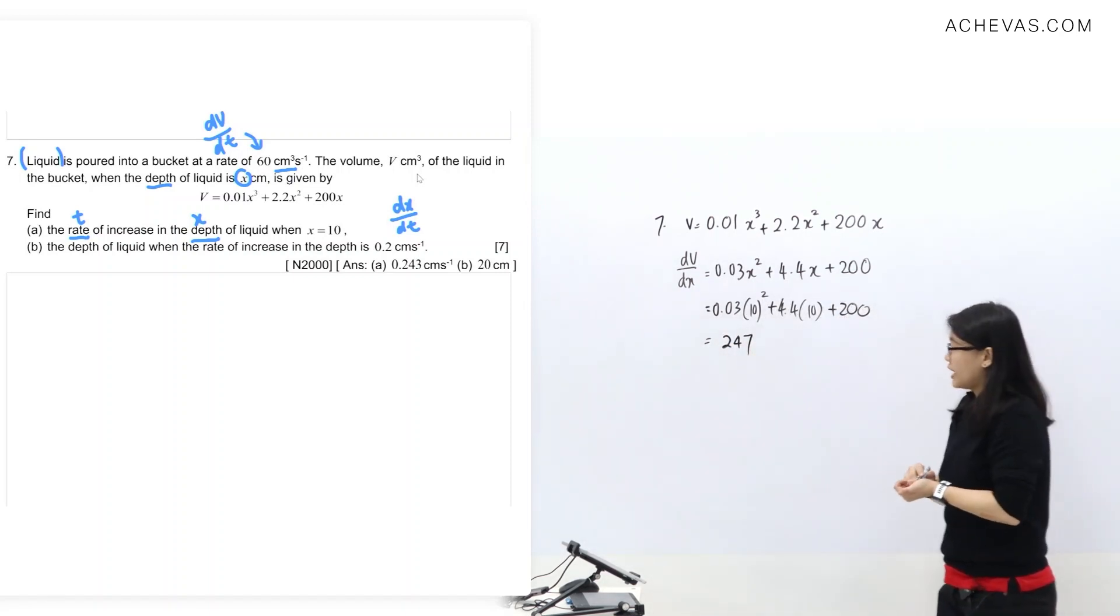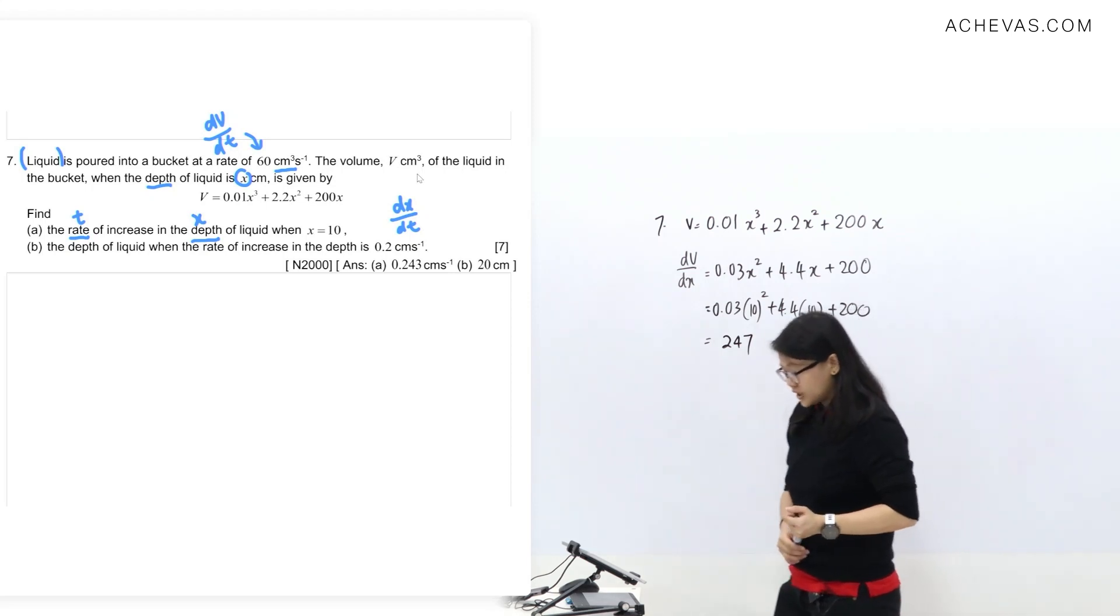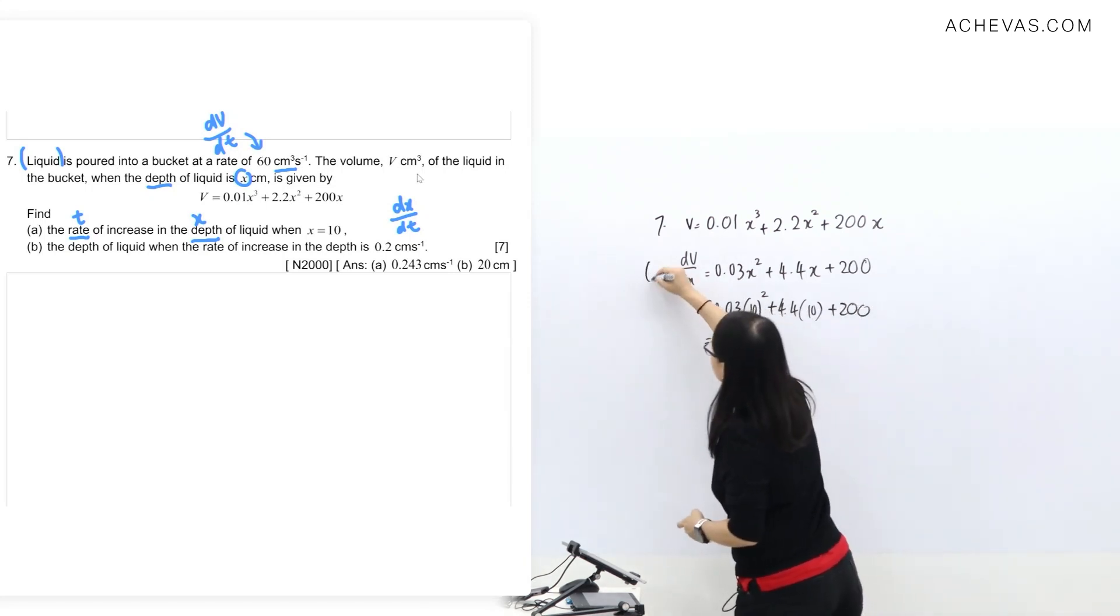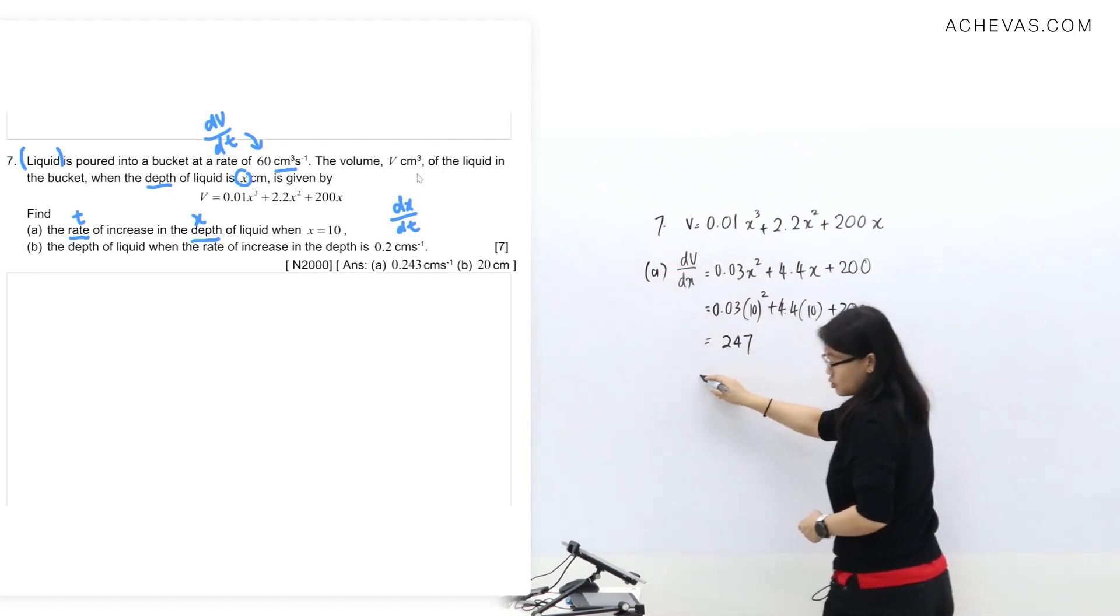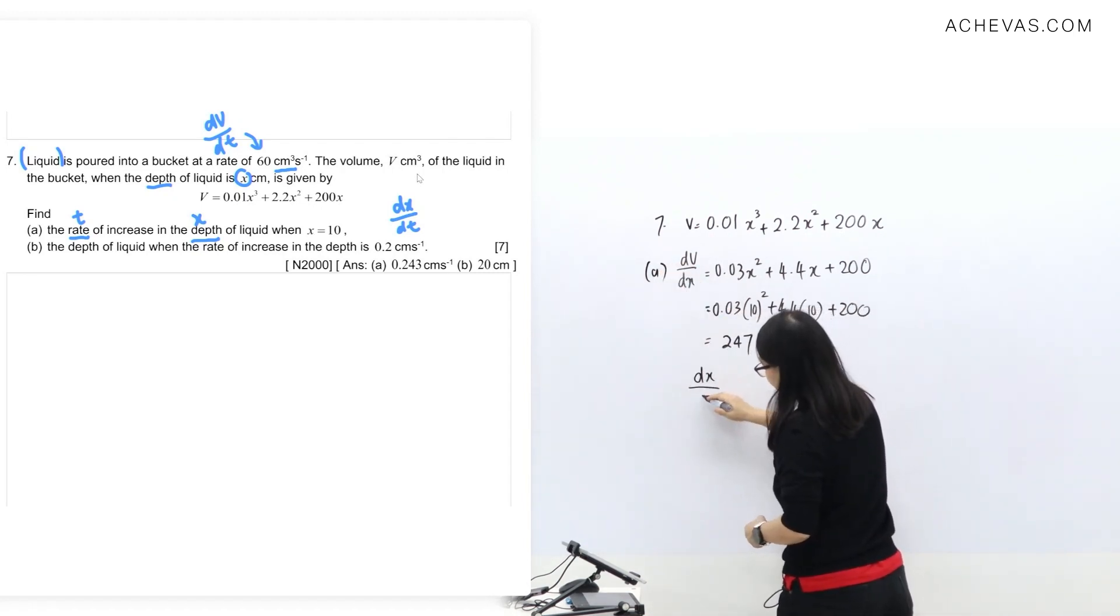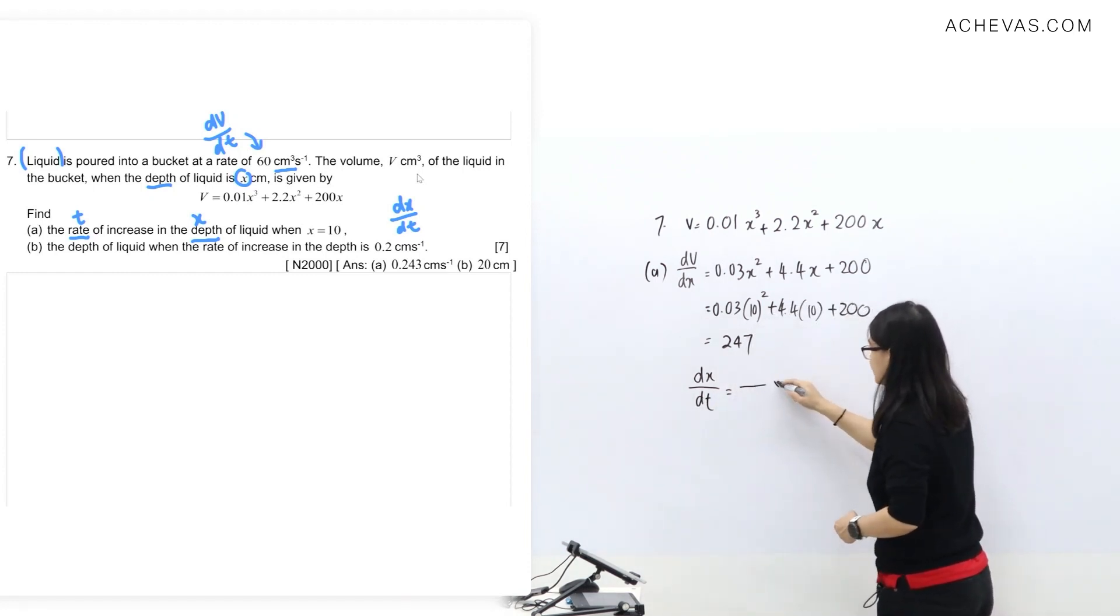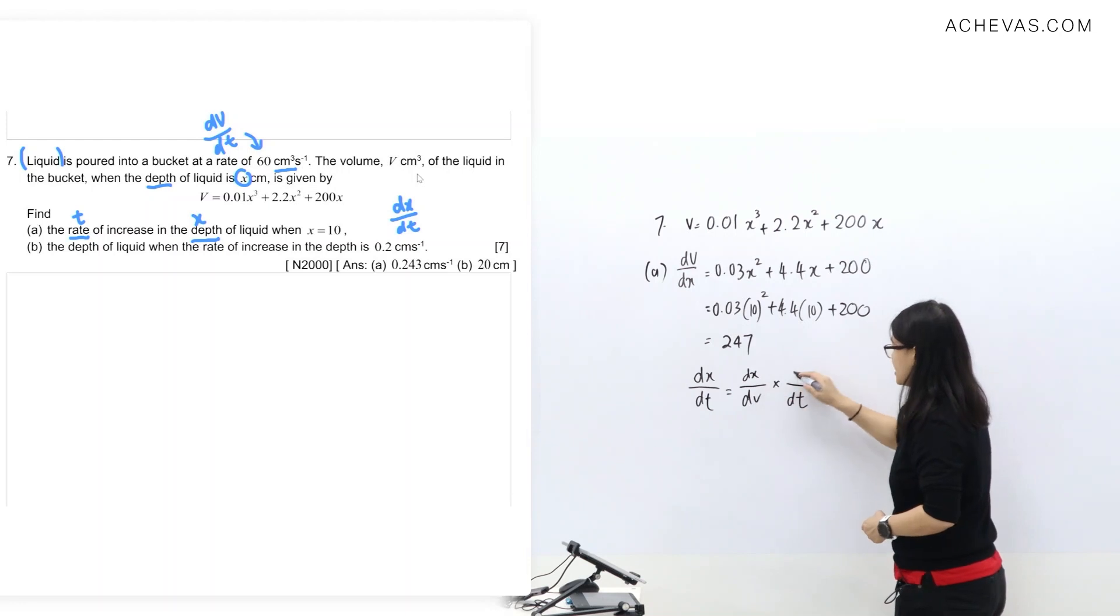I'm happy with that. I have differentiation. Let's proceed to question A. They're asking for the rate of increase of depth. That's dx/dt. So I split: dx/dt equals dV/dt times 1/(dV/dx).